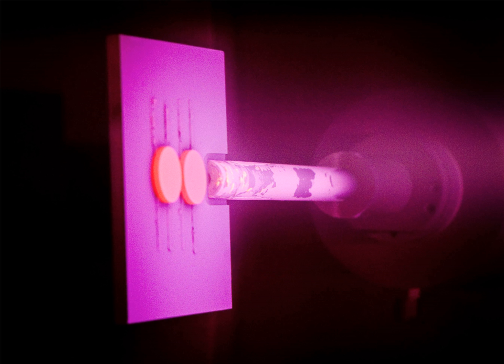The most common PVD processes are sputtering and evaporation. PVD is used in the manufacture of items which require thin films for mechanical, optical, chemical or electronic functions.